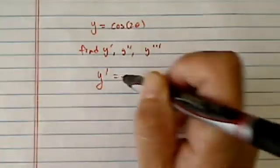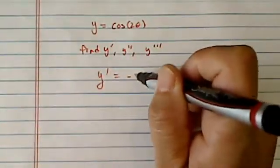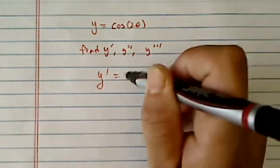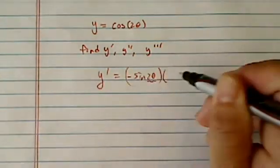This is a really interesting problem. y prime of cosine, cosine is minus sine, and then we have to take the derivative of this one, which is 2.